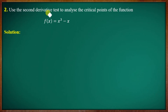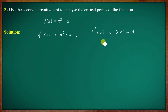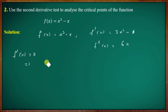Use the second derivative test to analyze the critical points of the function f of x equal to x cube minus x. The first derivative f dash of x is equal to 3x square minus 1. The second derivative f double dash of x is equal to 6x. Setting the first derivative equal to zero gives critical points x equal to plus or minus 1 by root 3.